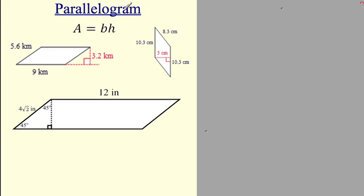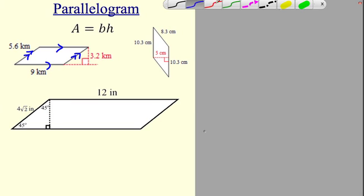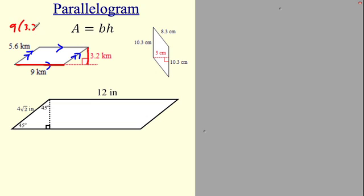Parallelogram — the sides are parallel, that's what it is. The formula is just base times height. The base goes from here to here, and the height is how tall it is. So the first one is just 9 times 3.2. If I flip it, 10.3 would be the base and 5 is the height — so 10.3 times 5. Don't cut these in half; just straight up multiply. Squares and rectangles are parallelograms too — they just have right angles.